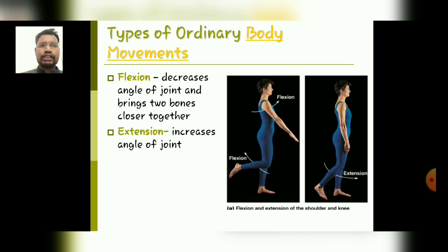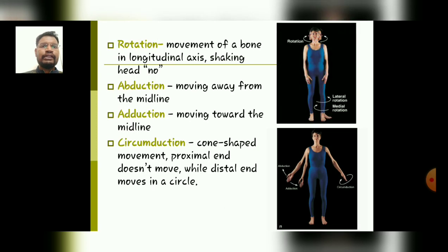The next is the types of ordinary body movements. First is flexion, which decreases the angle of a joint and brings two bones close together. Extension involves increasing the joint angle. Rotation involves the movement of a bone along its longitudinal axis — shaking the head 'no' is the best example of rotation. Abduction involves moving one part away from the midline, and adduction represents moving towards the midline of the body.